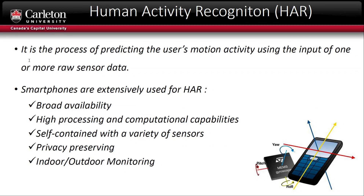Human Activity Recognition is an important active research area aimed at predicting the user motion using the input of one or more raw sensor data. These sensors could be vision-based sensors, environment interactive sensors, or wearable sensors. In this research we are concerned with smartphones as wearable sensors because they are available with almost everyone and are self-contained with inertial sensors like accelerometer and gyroscope. The most important feature of smartphones is that they could provide continuous human motion tracking indoor and outdoor with privacy preserving.